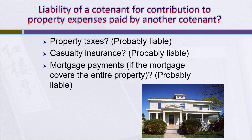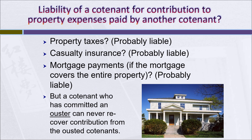What about mortgage payments? Let's assume there's a mortgage that covers the entire property. In all probability, the ones who are out of possession are going to be liable to kick in their shares of the mortgage payments. Now, there's a big exception here: a co-tenant who has committed an ouster can never recover contribution from the ousted co-tenant. So an ouster puts the co-tenant who's making expenditures on a completely different footing, and those expenditures will simply come out of his or her pocket and never get reimbursed.